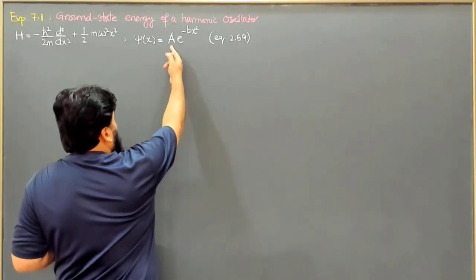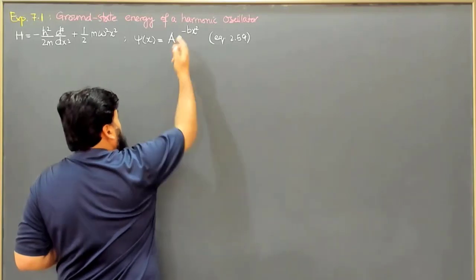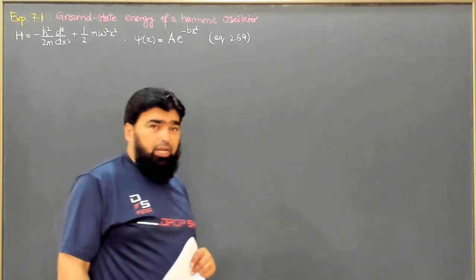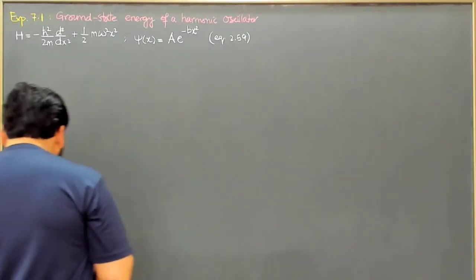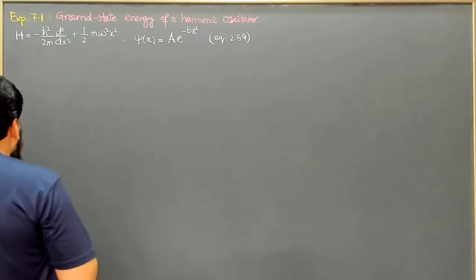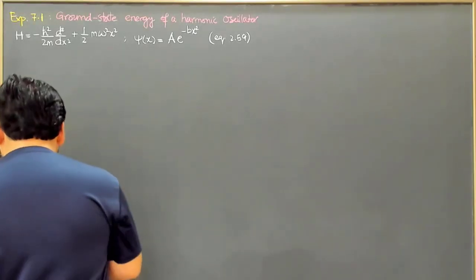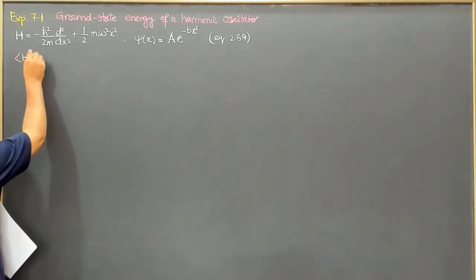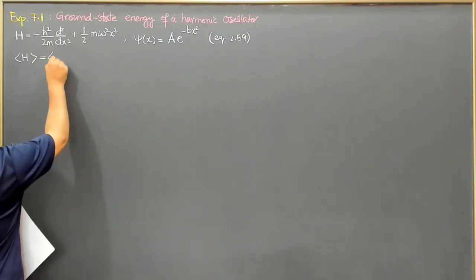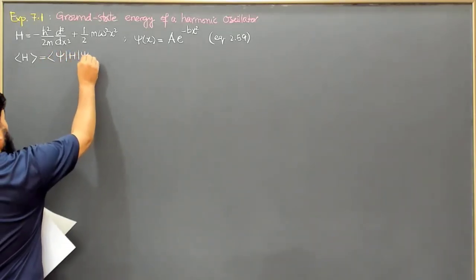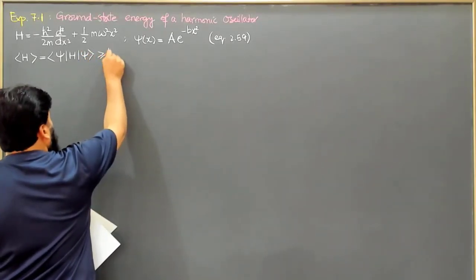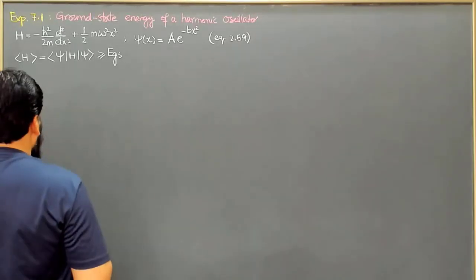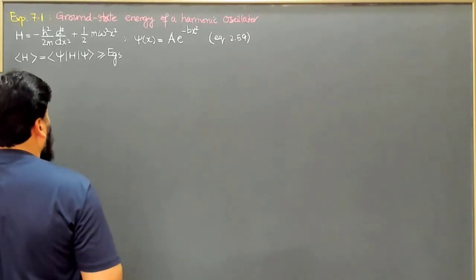In this trial function, A is the normalization constant while b is a variational parameter that we will determine at the end of this example. We will determine the expectation value of H, which is equal to the bracket psi H psi bracket, and this is greater than or equal to the ground state energy. So we will start with our trial function.